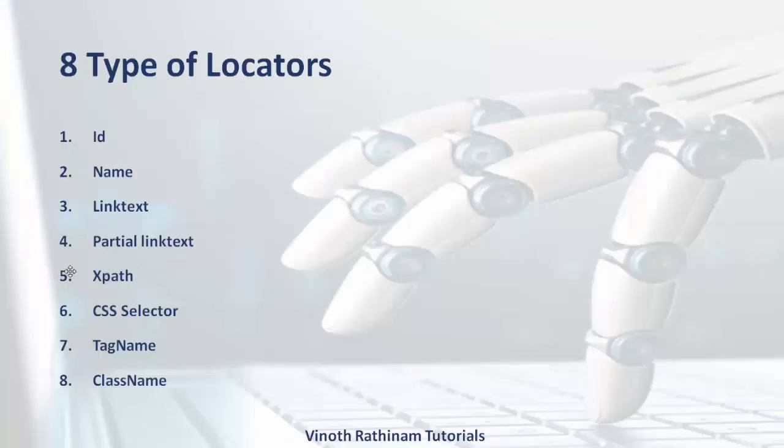The fifth one is XPath. We have two types of XPath. One is absolute XPath. Another one is relative XPath. We will have a separate video for this XPath alone.